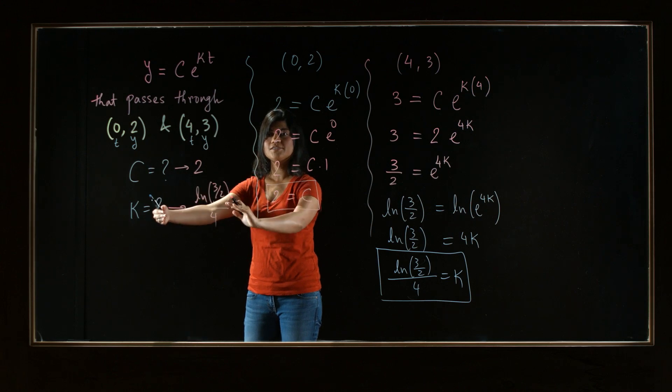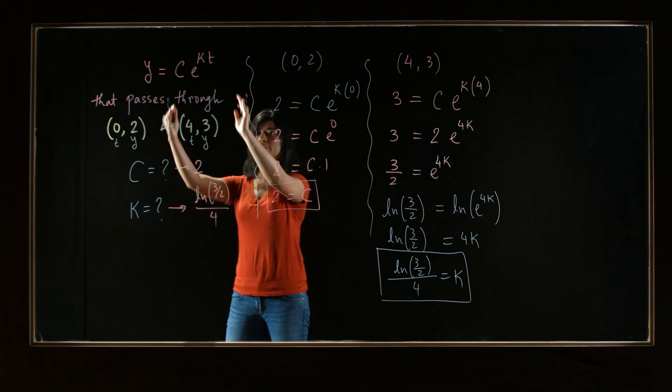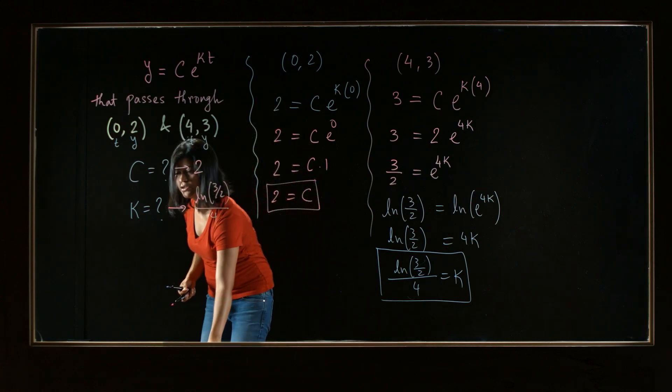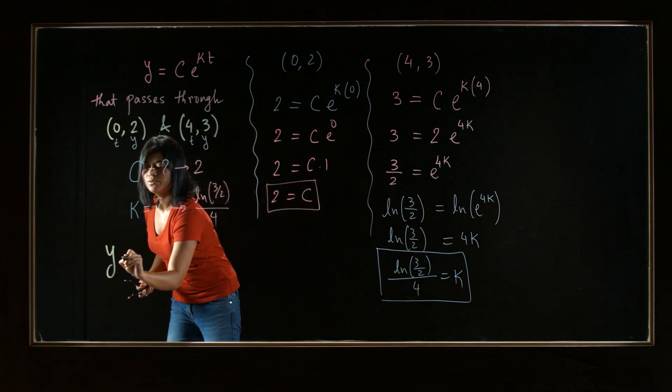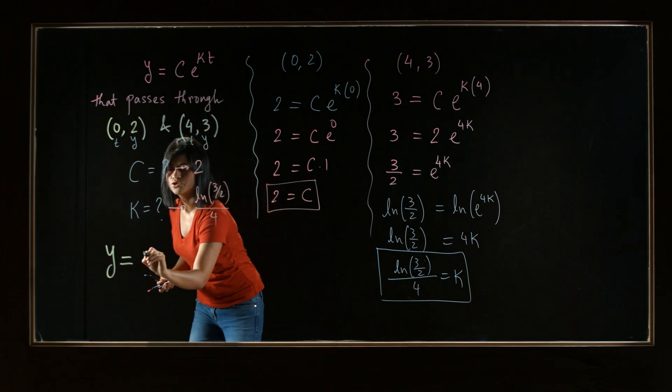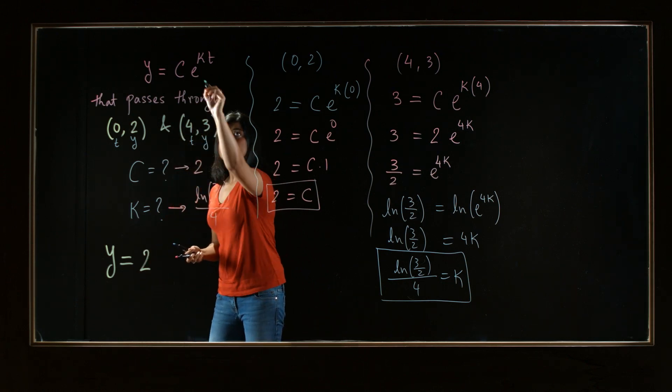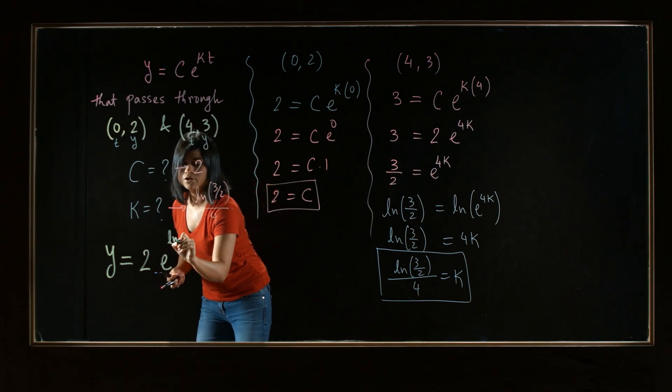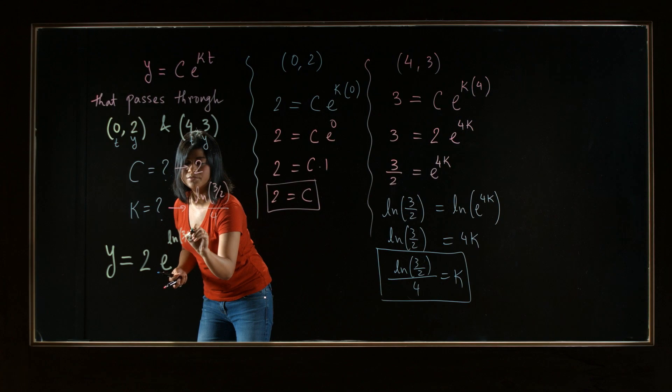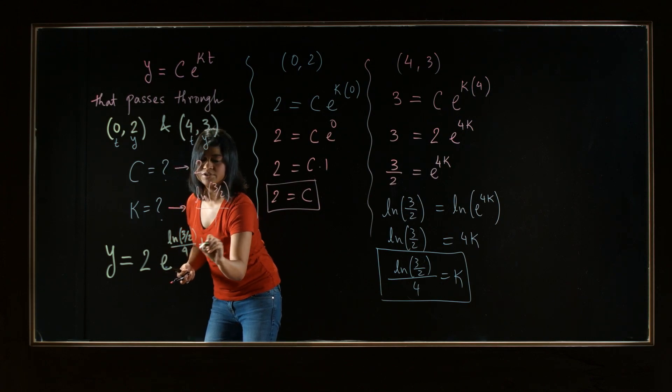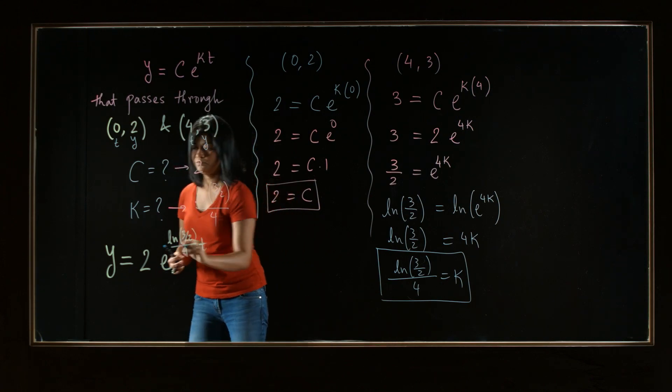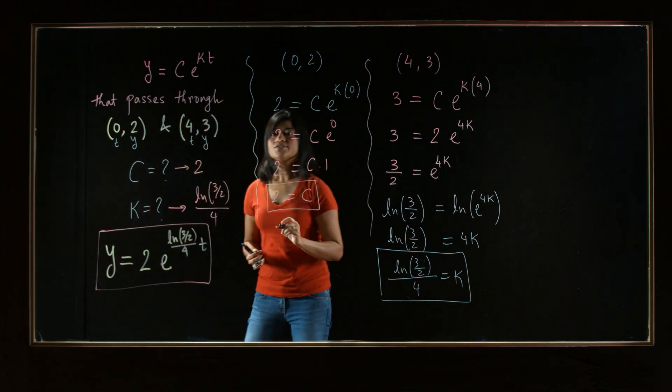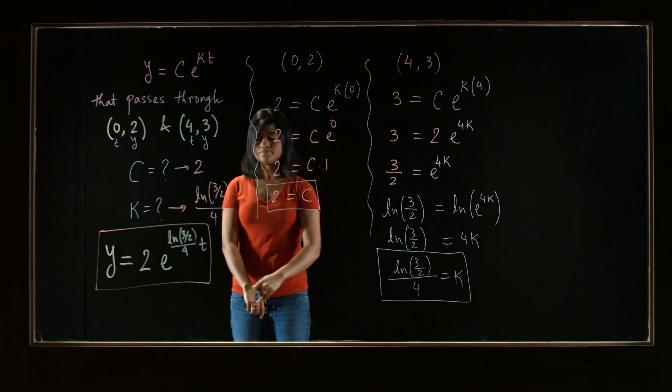So we have both our constants. That's all we needed. Now we can write down the equation that will pass through these two points. So what is the equation? That is y is equal to c times c is 2 e to the power. k is right here. So natural log 3/2 over 4t. So this is our final answer. Thank you.